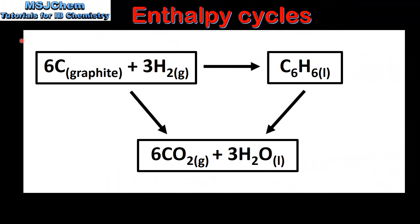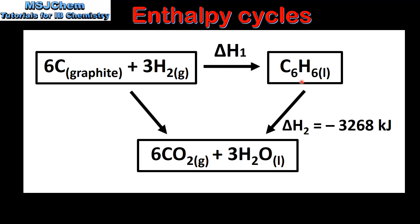Next we'll have a look at an example. In this enthalpy cycle there are two possible routes to go from the reactants, which are carbon and hydrogen, to the products which are carbon dioxide and water. The first route starts with the reaction of carbon and hydrogen to form one mole of C6H6, which is benzene. This represents the enthalpy change of formation of benzene and we'll call this delta H1. Next we have the combustion of one mole of benzene to form carbon dioxide and water, which we'll call delta H2.